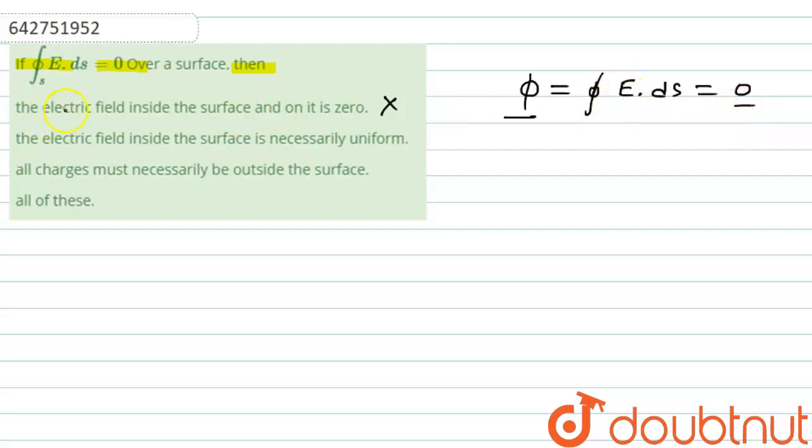We cannot say that the electric field inside the surface is necessarily uniform because we are talking about the electric flux which is the electric field lines passing through any surface area. So this option is also incorrect.